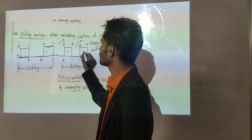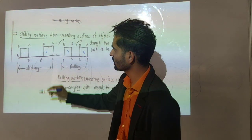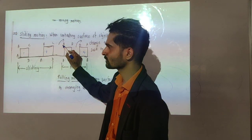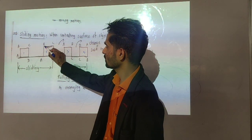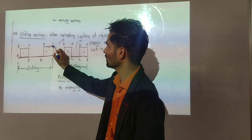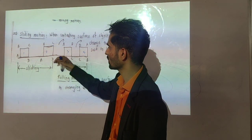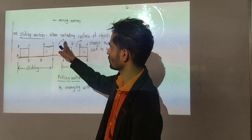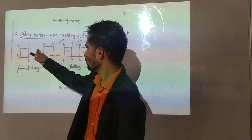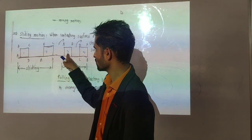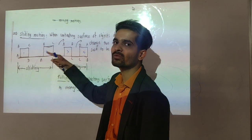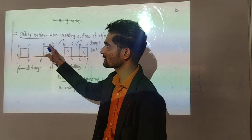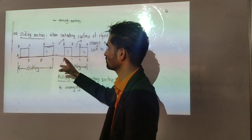From two to three, and three to four — see here, point A comes to a new position, point B moves to a new position, C moves to a new position. So from two to three and three to four, the object is rotating. This is rotational motion and not sliding motion.